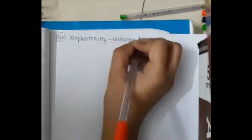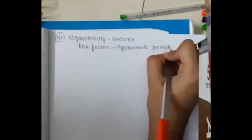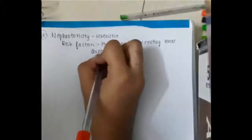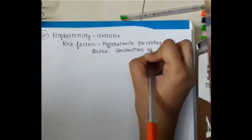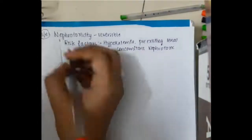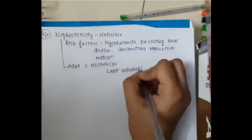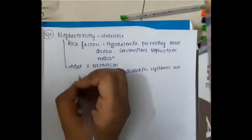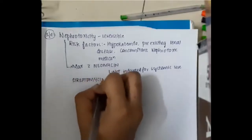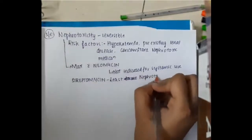Important side effects of aminoglycosides include nephrotoxicity, which is reversible. Risk factors for nephrotoxicity include hypokalemia, pre-existing renal disease, and concomitant nephrotoxic medications. Nephrotoxicity is seen maximum with neomycin, which is therefore not indicated for systemic use.